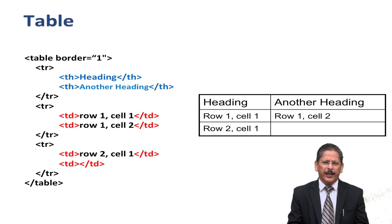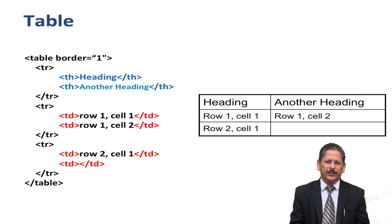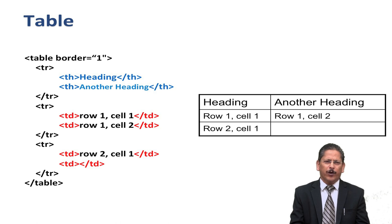Moving to the third row, we have TD 'Row 2 Cell 1' which will be displayed in the third row, and the fourth cell is blank because we have not mentioned any value — nothing is written between TD and slash TD. Accordingly, that table cell will be displayed blank. The row is then closed and the table is closed. This is a complete example of a table.